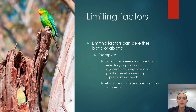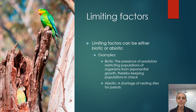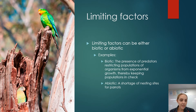Limiting factors can be described as biotic — the living components of an ecosystem — or abiotic, the non-living components. Going back to the example of the endangered parrots, a biotic limiting factor might be the presence of predators, which restrict populations from exponential growth. An abiotic limiting factor might be a shortage of nesting sites due to deforestation, tree clearing, or an extreme weather event.